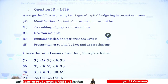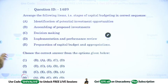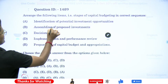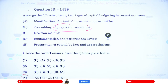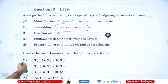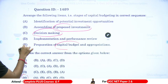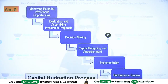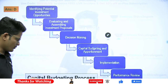Answer for this question is D — A, B, C, E. First, identify the potential investments — identify the proposed investment. Later, gather and assemble the proposed investment alternatives. Then decision making — out of many proposals, which one we want to implement. Later, prepare a budget for each proposal we've fixed. Finally, implementation is the last step. This is the capital budgeting process: Opportunities, Assembling, Decision, Budget, Implementation, Review.